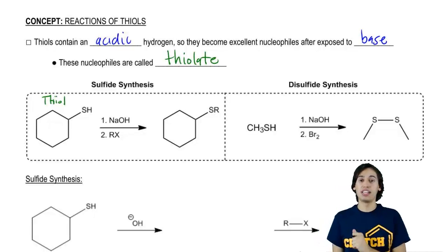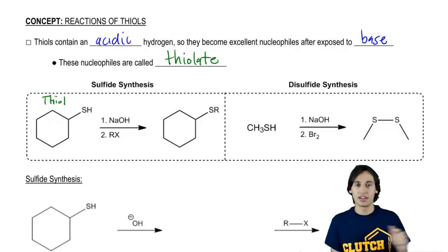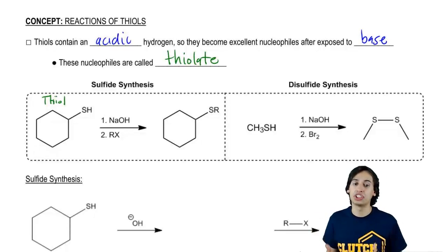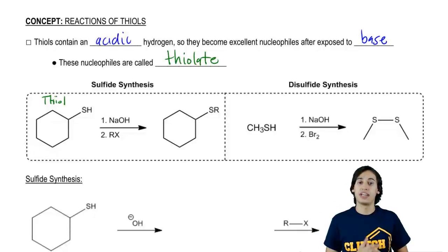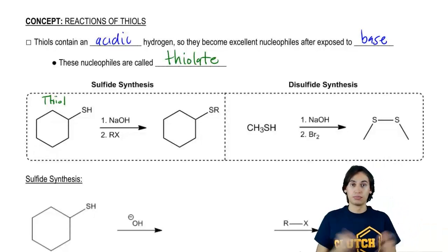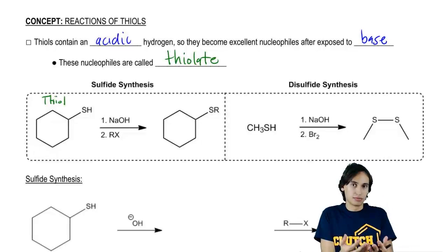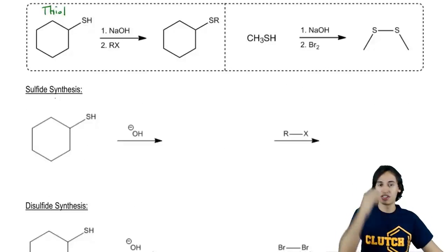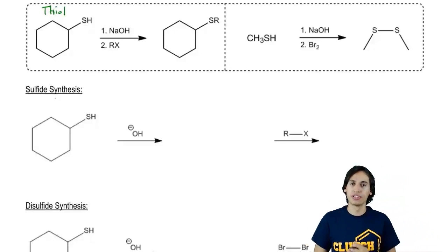The base is going to deprotonate the H and make my thiolate anion. Then that thiolate anion performs an SN2 reaction on an alkyl halide and alkylates. So what we wind up getting is a sulfide, basically the analog to an ether, just with an S instead of the O for the ether. Let's go ahead and look at how this full mechanism, let's draw it out and make sure that we're all on the same page.